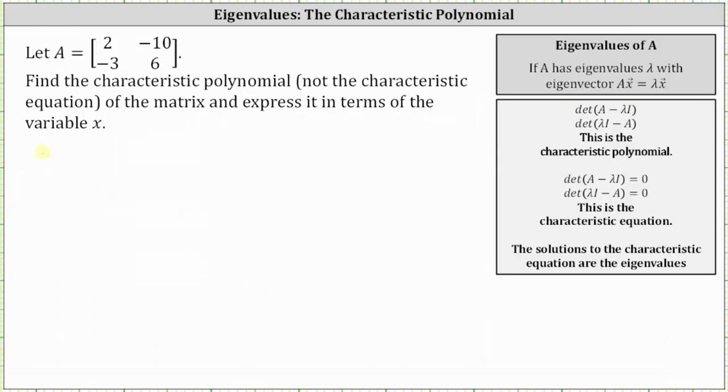So we'll have the determinant of the difference of matrix A and x times the identity matrix. This gives us the determinant of, again, matrix A minus x times the two by two identity matrix.